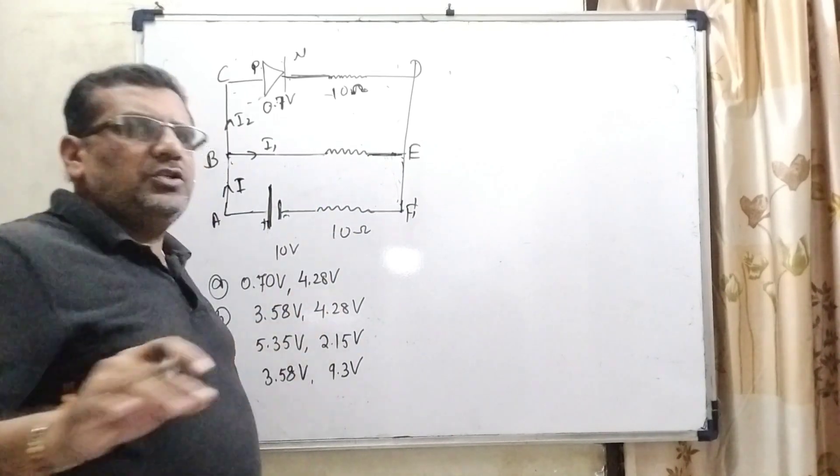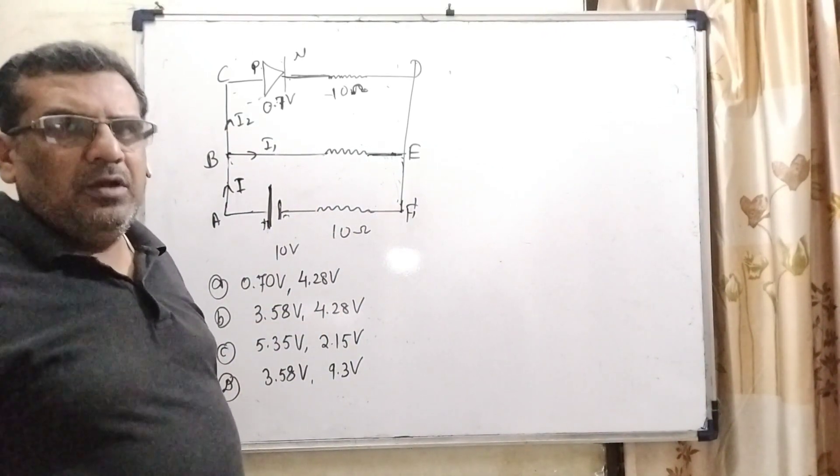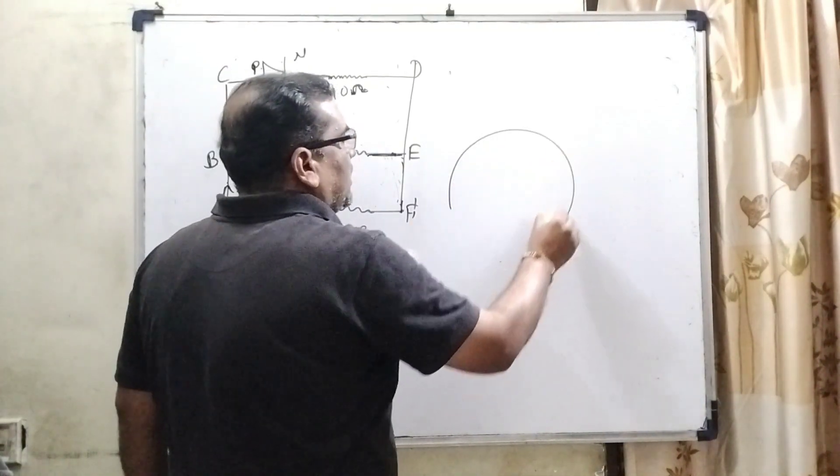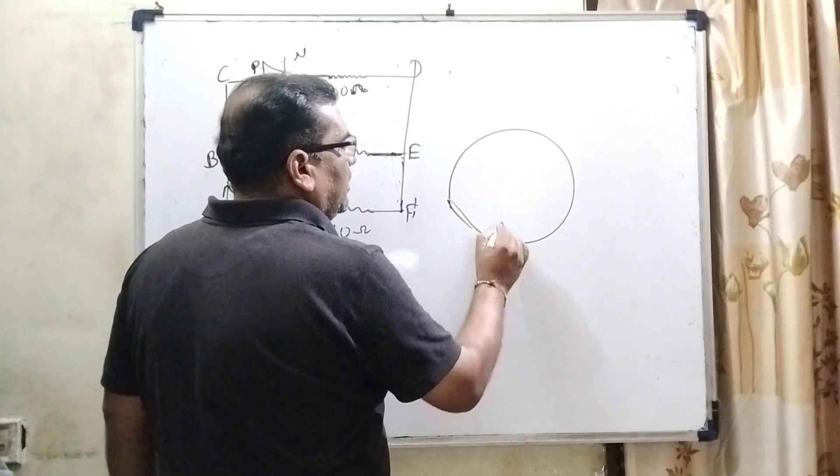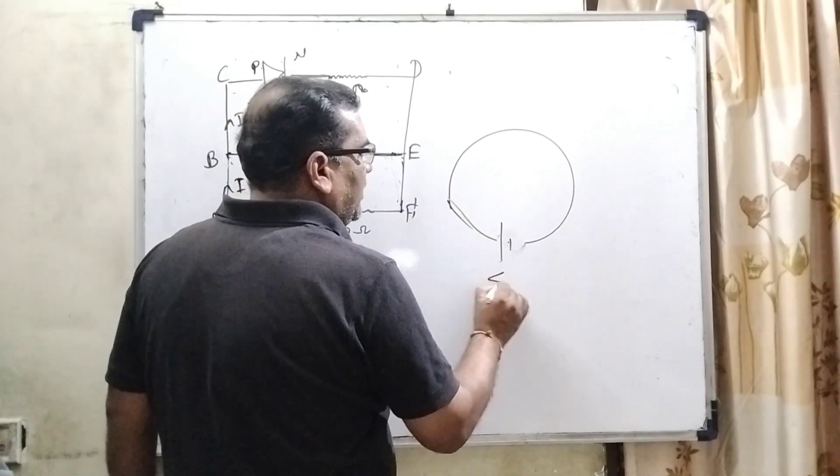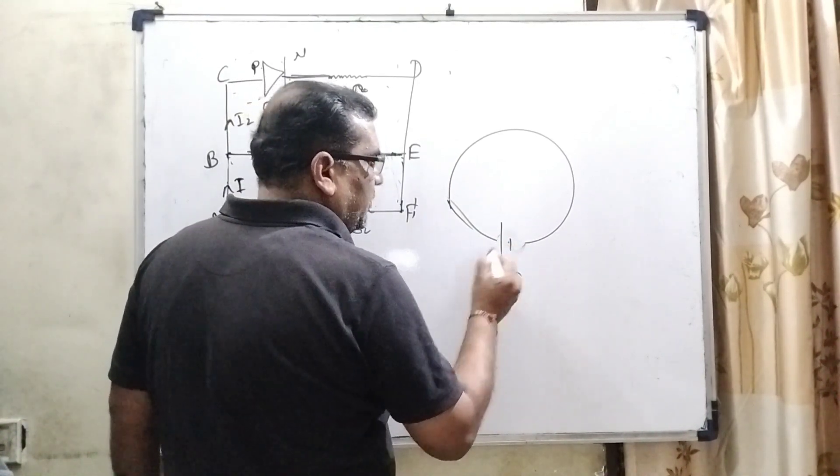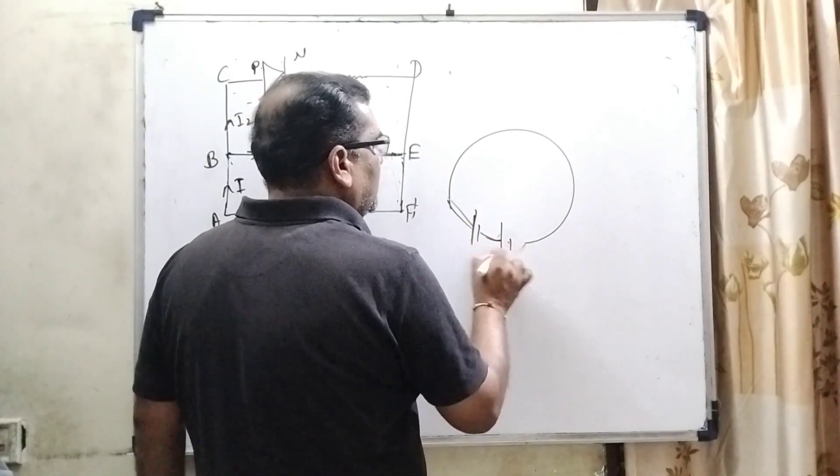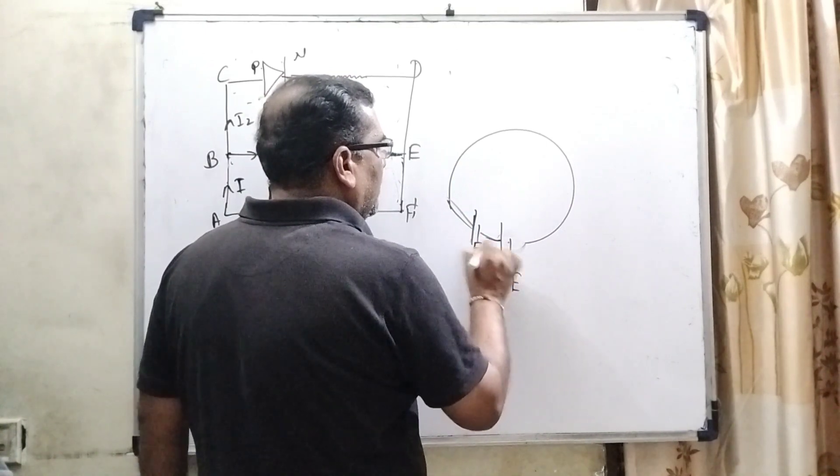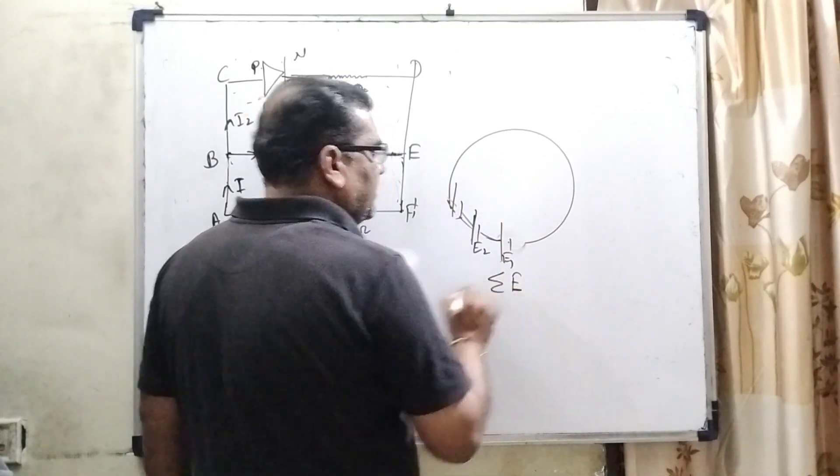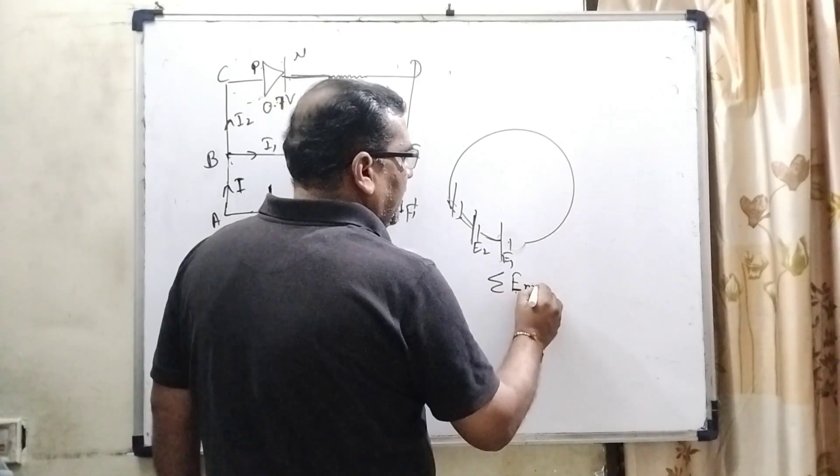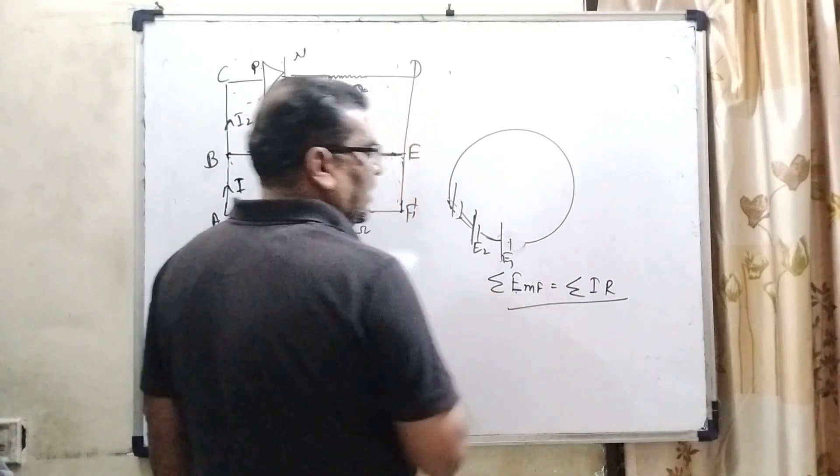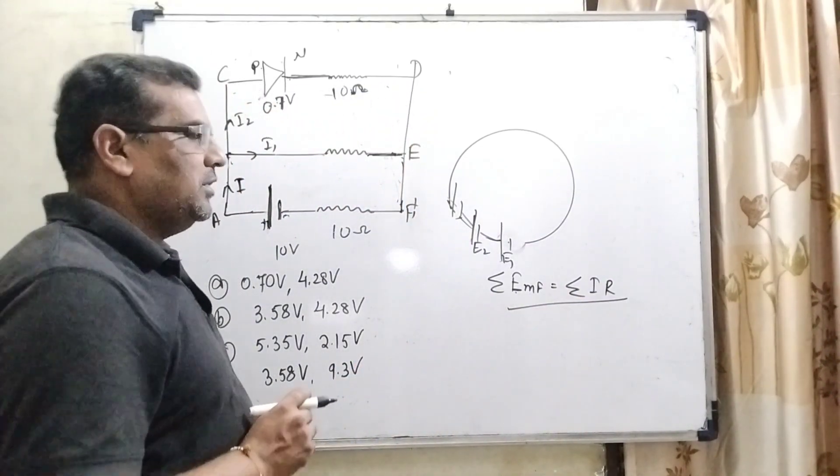So here we are using Kirchhoff's closed circuit law. What does Kirchhoff's closed circuit law say? In a closed loop, the summation of EMF - suppose E1, E2, E3 batteries are connected - the summation of EMF is equal to summation of product of current and resistance. This is Kirchhoff's closed circuit law.